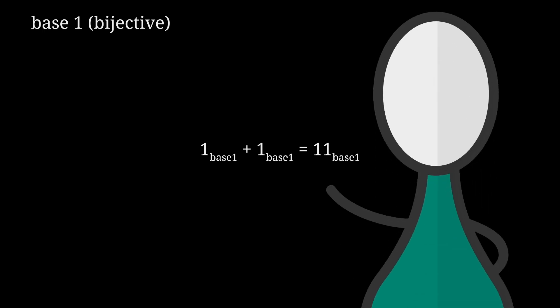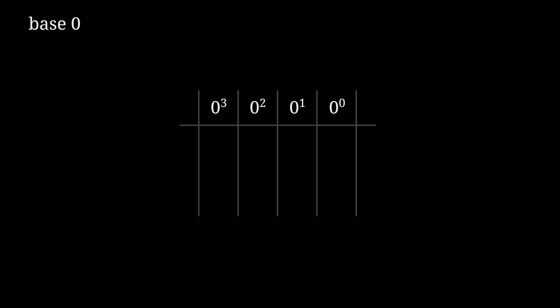Now there is one base stranger still, and it uses the strangest number of them all. Allow me to introduce nullary — like base 0. In base 0 you get 0 digits, so you can't write anything. But let's say you do get a digit — let's say it's 1. What does the number 1 mean in nullary? It would be 1 times 0 to the 0, which is undefined. In nullary, you can't write anything because you don't have any digits. But even if you did, the only thing you could write would be equivalent to 0 divided by 0.